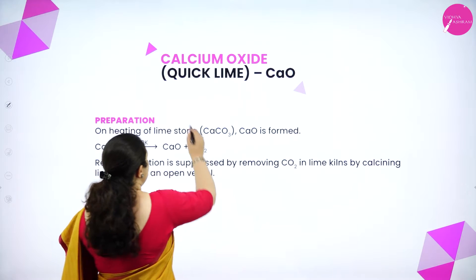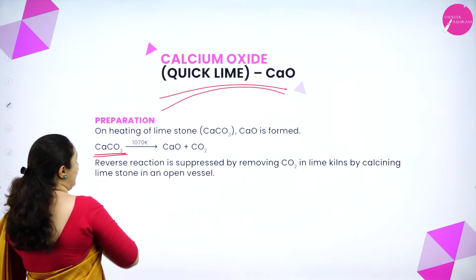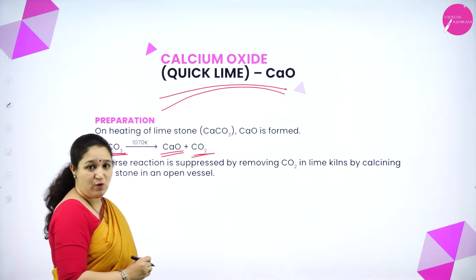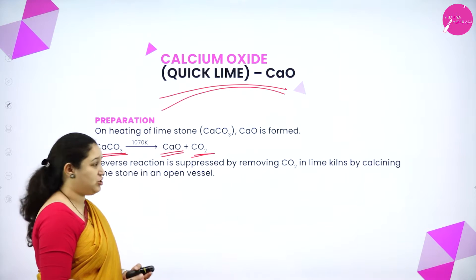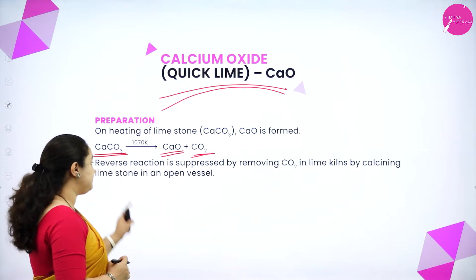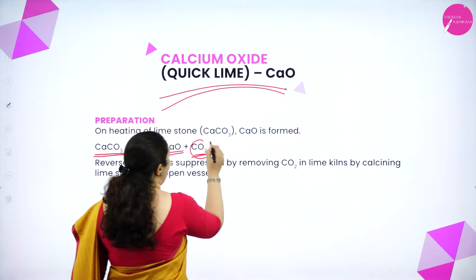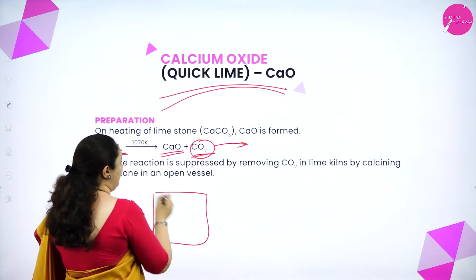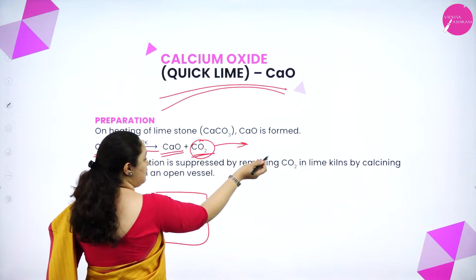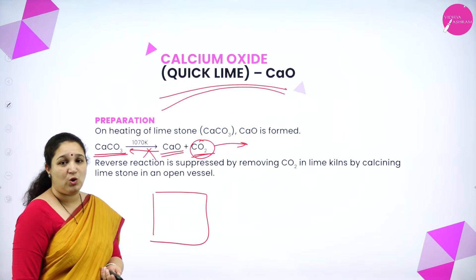Next, we will see about quick lime, that is calcium oxide (CaO). It is prepared by heating calcium carbonate at 1073 Kelvin to give calcium oxide and carbon dioxide. The reverse reaction is possible but is prevented by removing the carbon dioxide from the system.